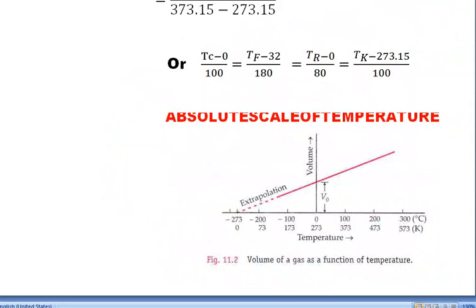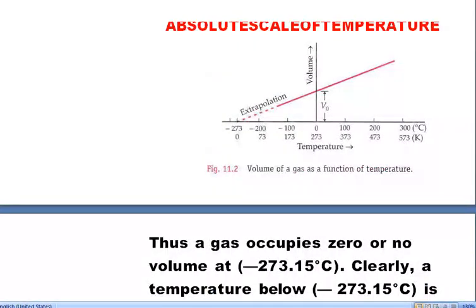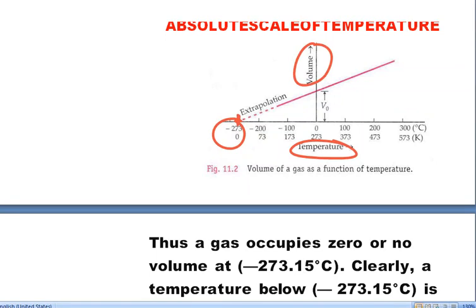Absolute scale of temperature: when measuring temperature in Kelvin, this scale is termed the absolute scale. From the volume-versus-temperature graph, at minus 273°C a substance reaches zero volume. Since negative volume is not physically possible, temperature cannot be less than minus 273°C, which corresponds to 0 Kelvin. This dotted-line graph is hypothetical, but it establishes the concept of absolute zero.